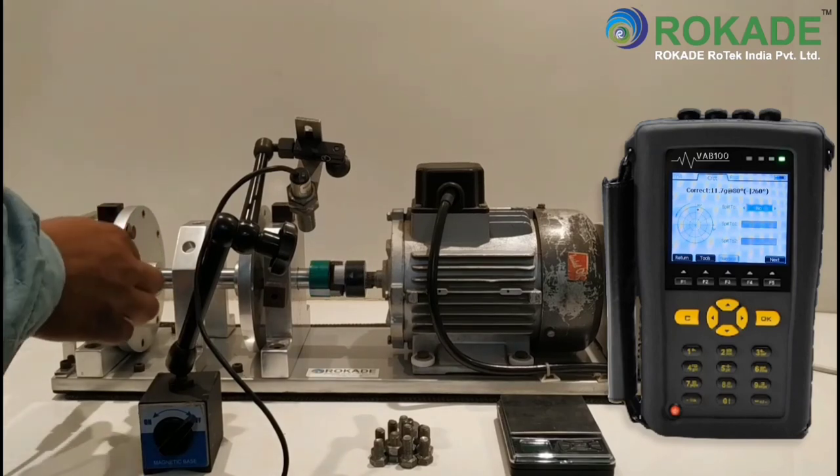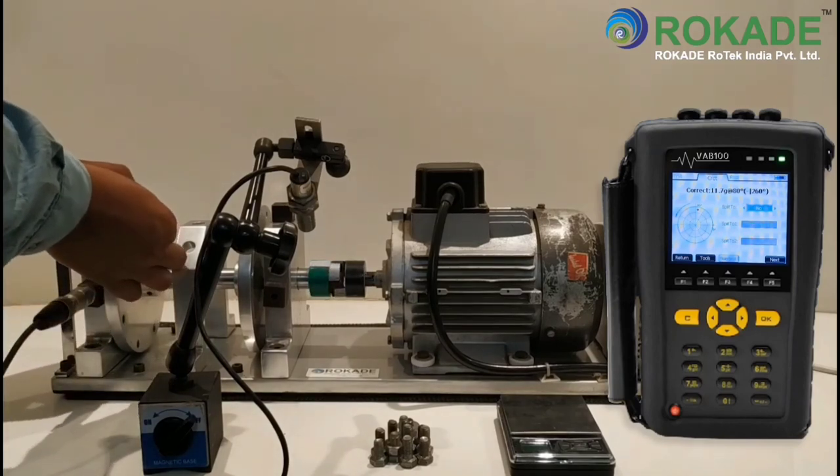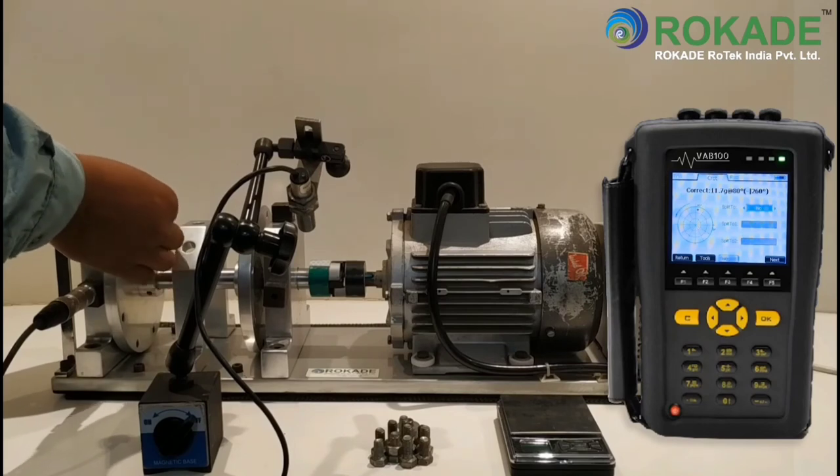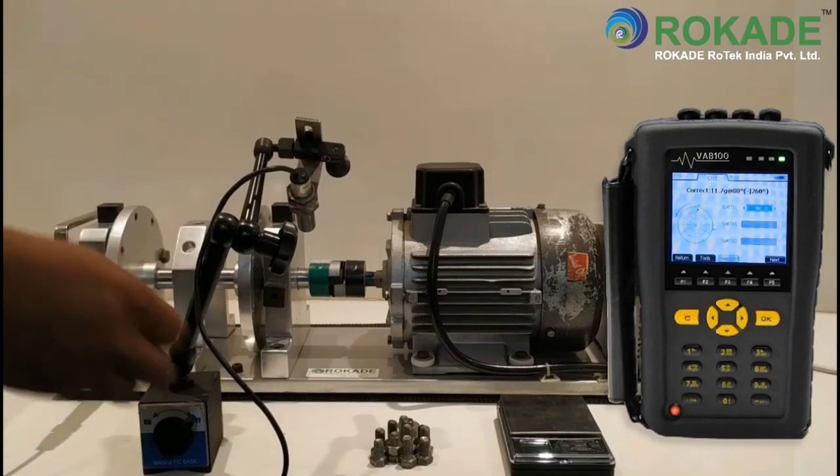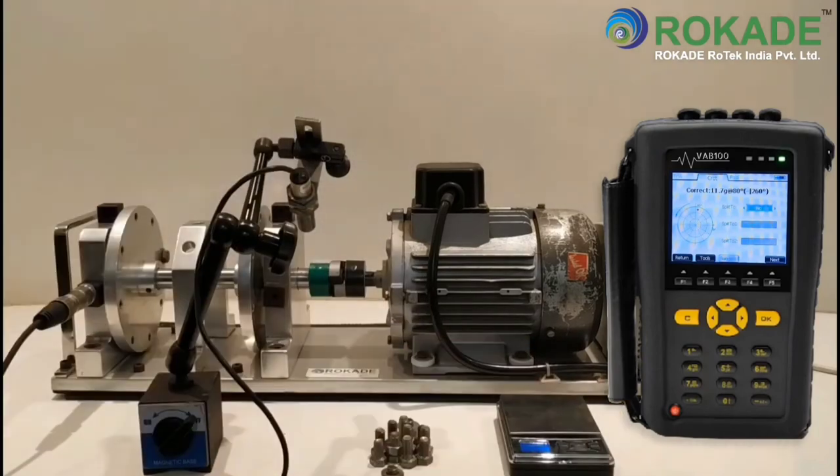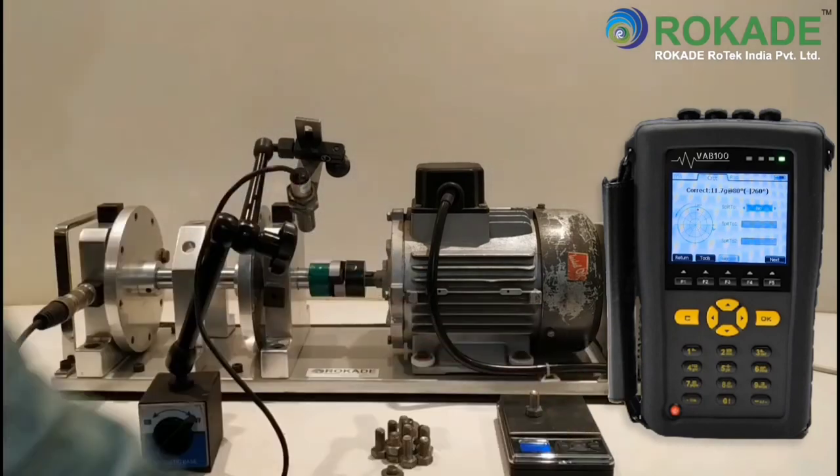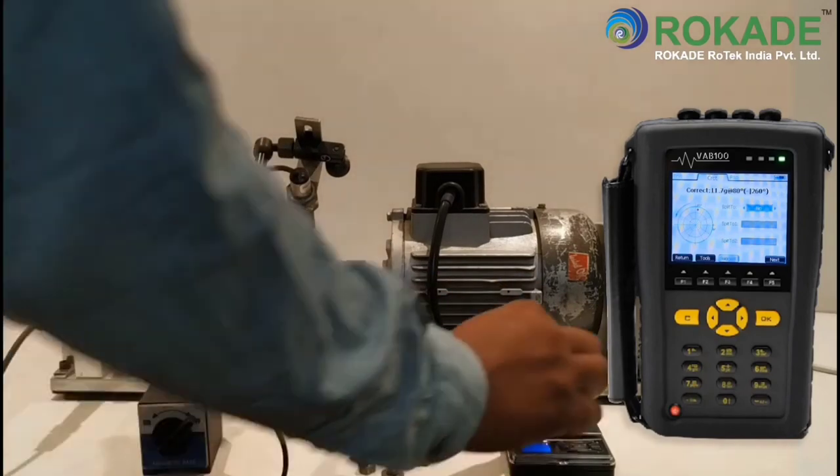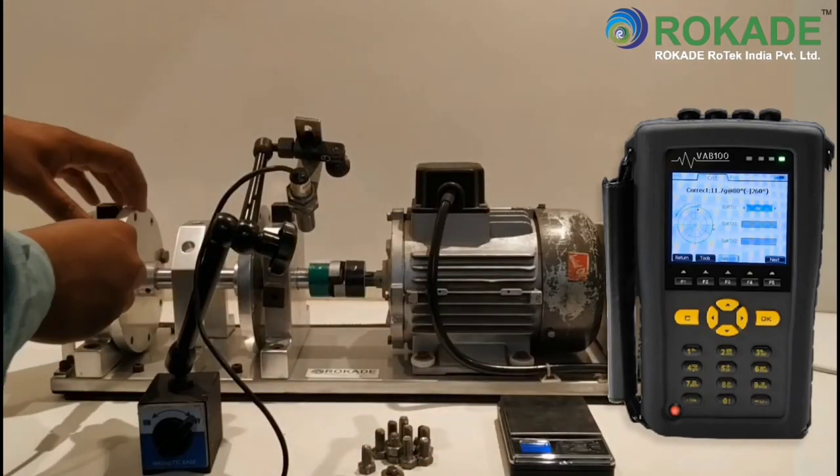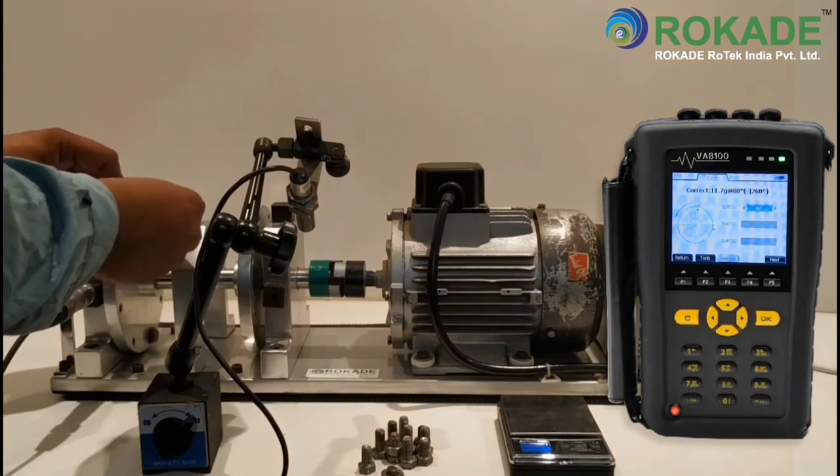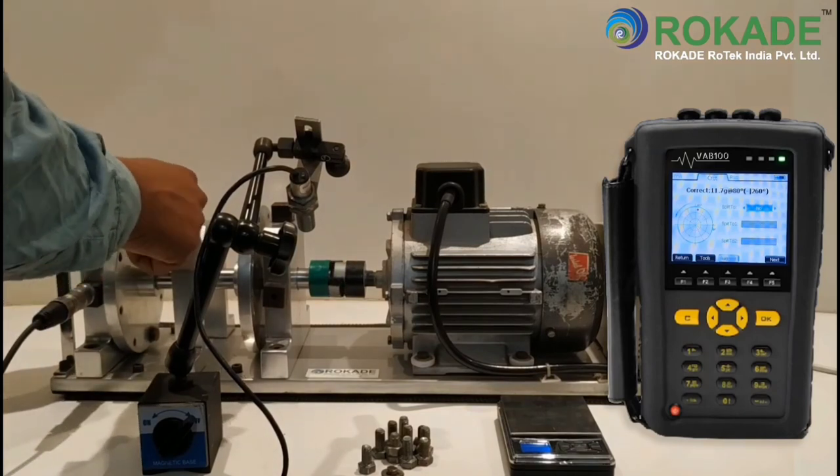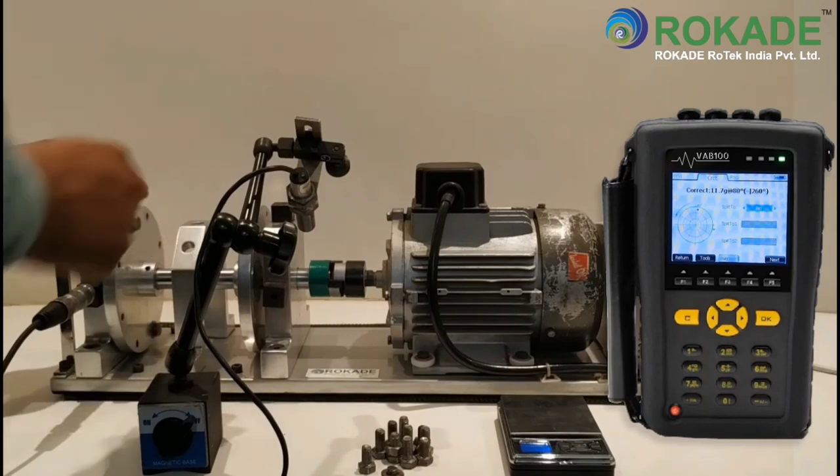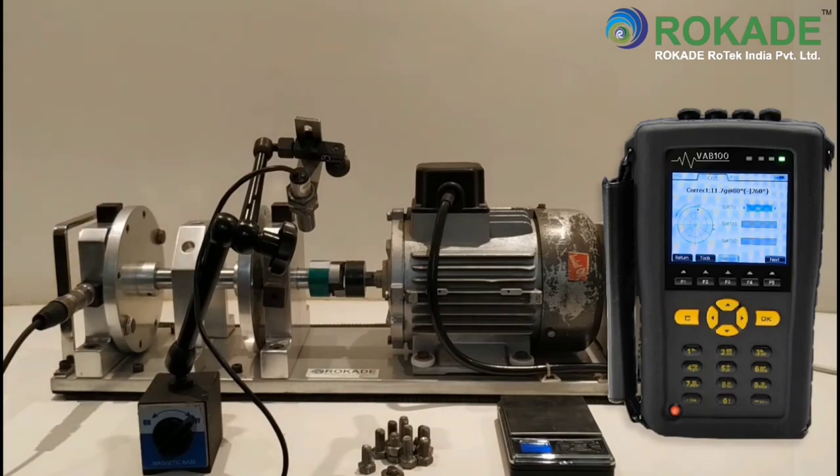Remove the trial weight. Add the correction weight by marking the degree from trial mass that is zero degree. Now again start the machine.